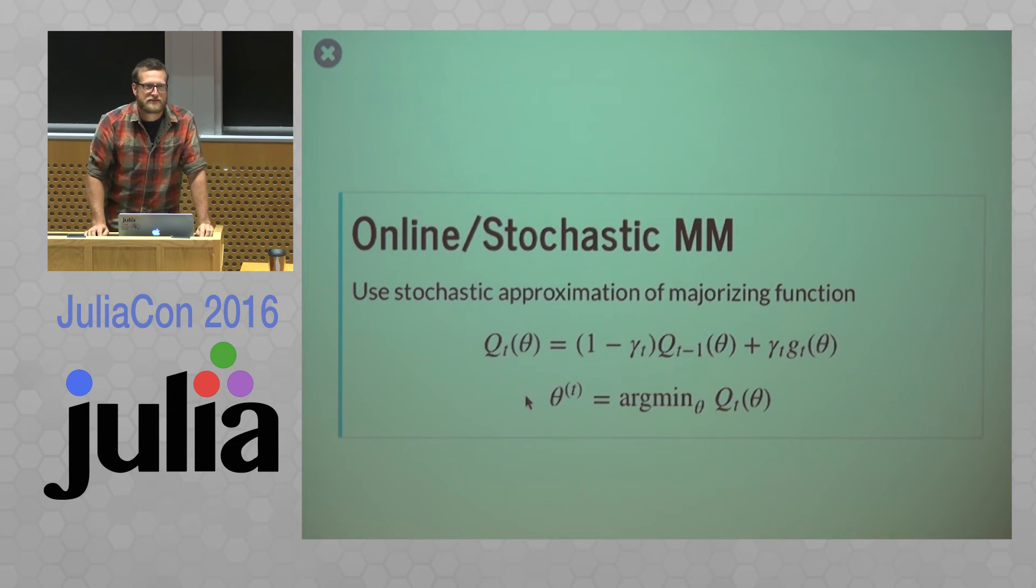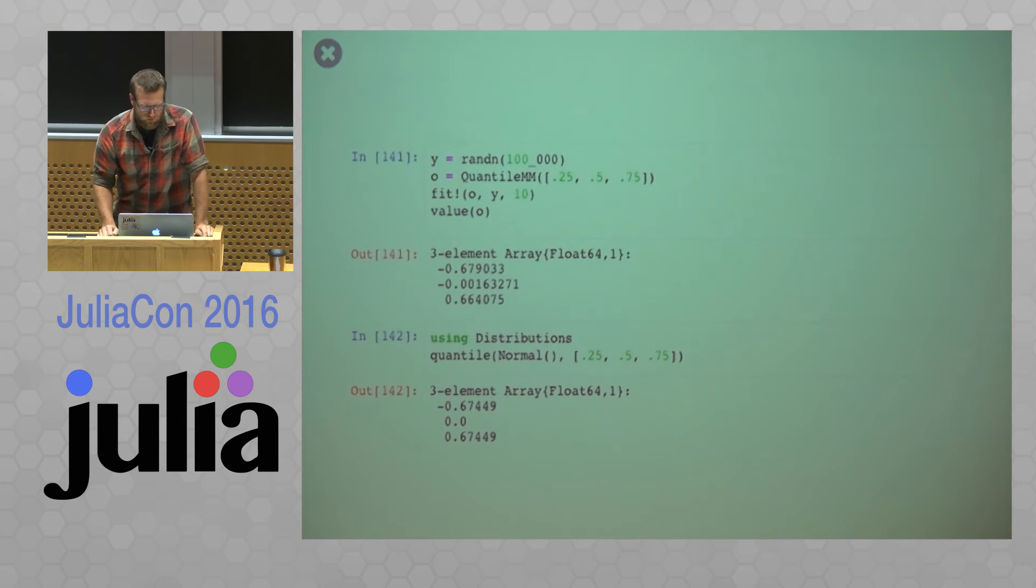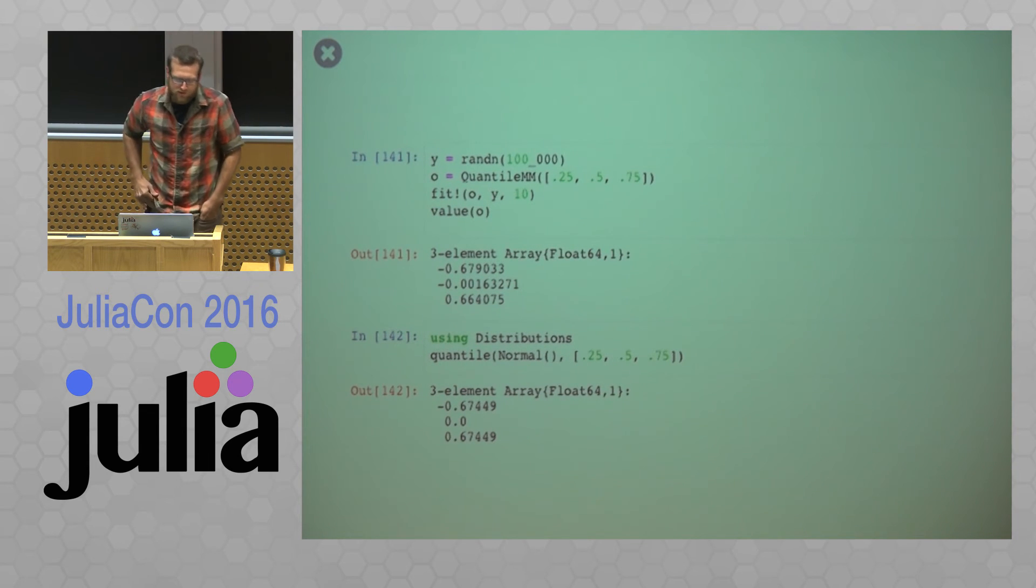So we aggregate this majorizing function together and then we get the minimum of that. So the way I categorize things before, this is one of the hard problems. So we're not calculating our theta directly. We're kind of aggregating some kind of sufficient statistics in quotes from which we can calculate that theta.